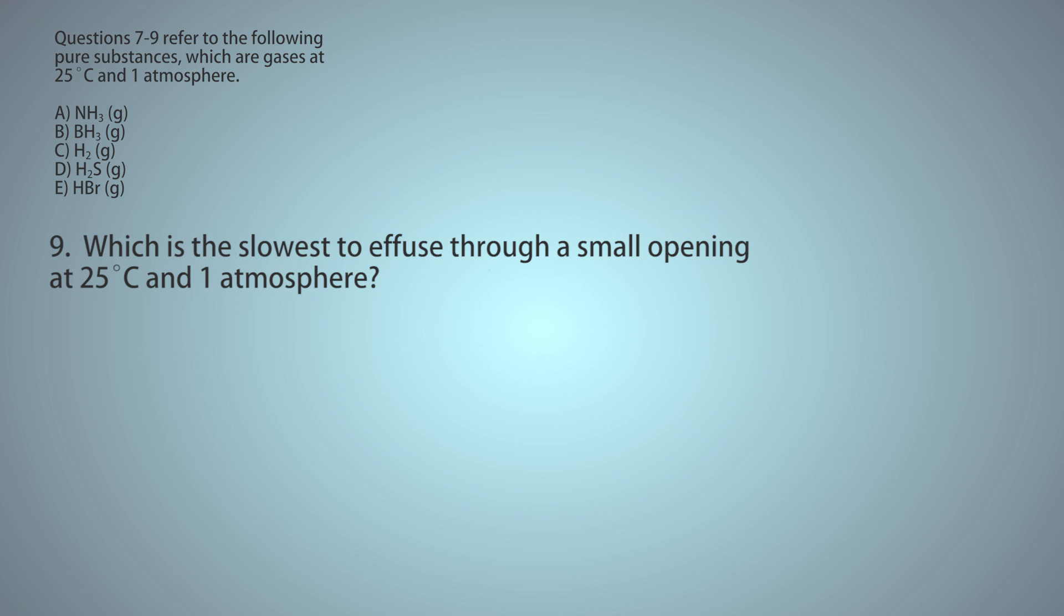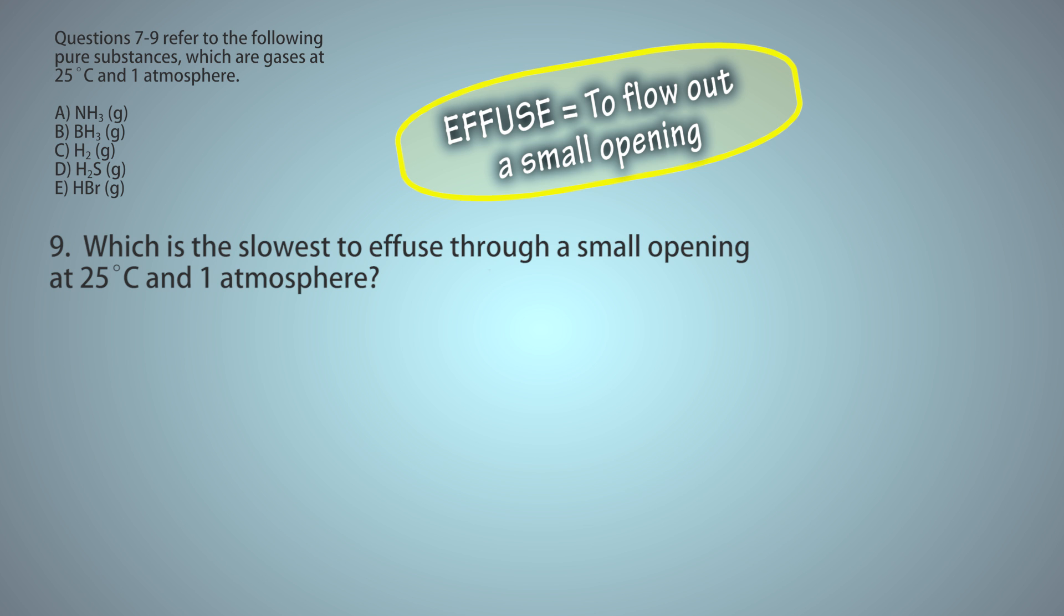Question 9. Which is the slowest to effuse through a small opening, at 25 degrees Celsius and 1 atmosphere? Gases with a higher molecular weight effuse more slowly than gases with a lower molecular weight.